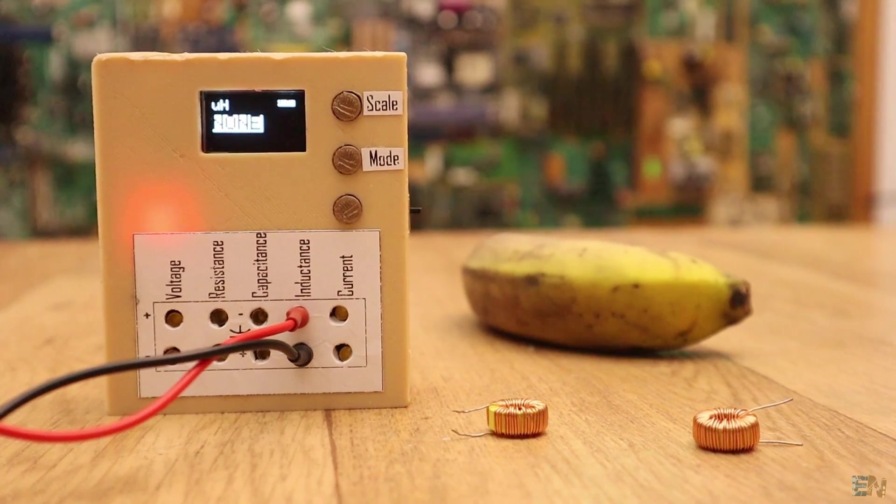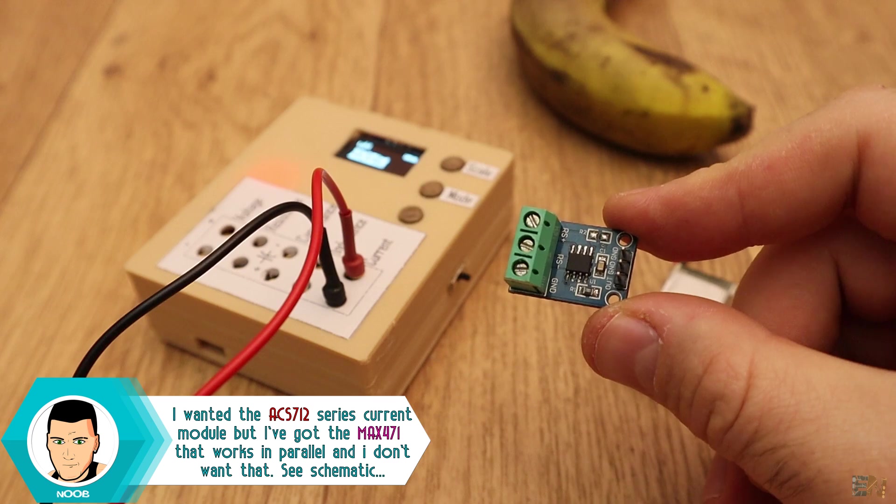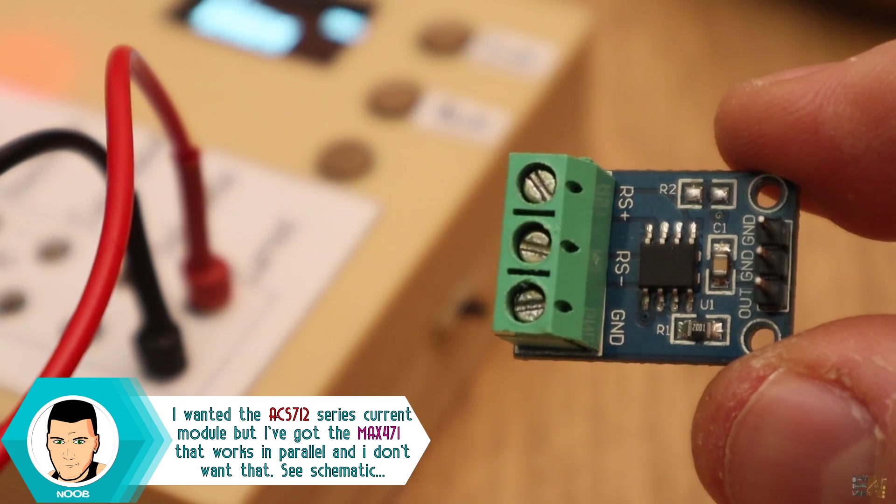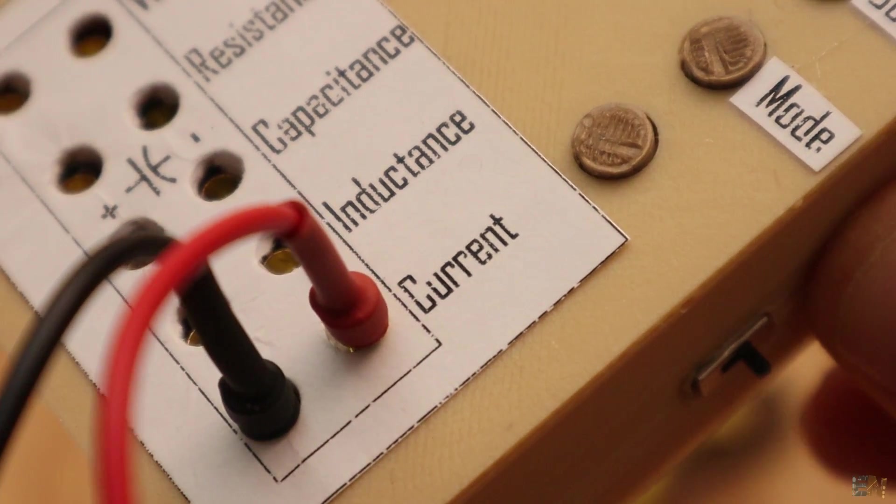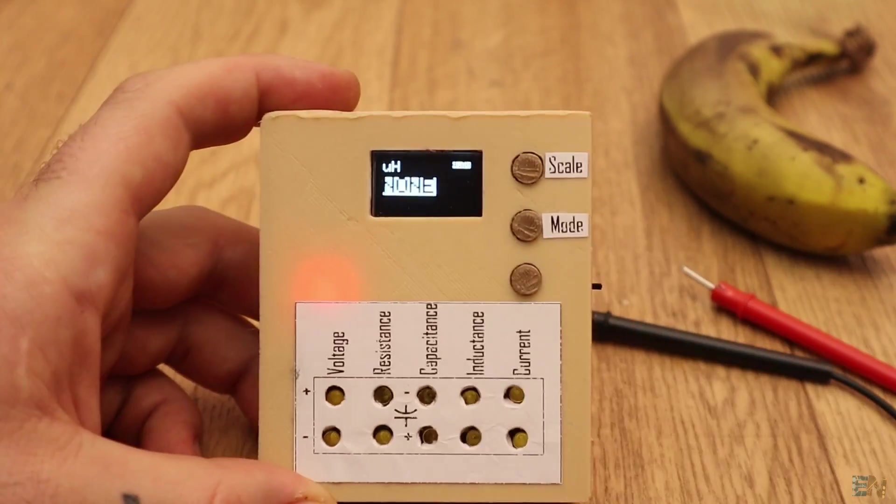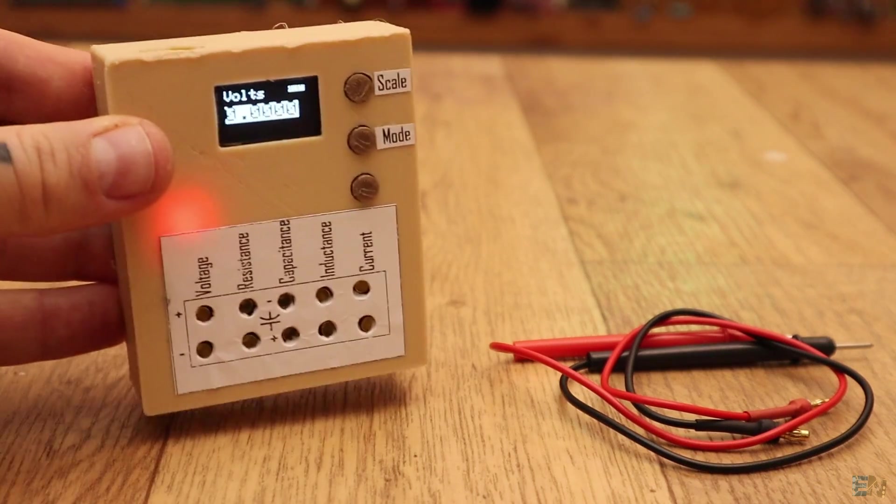So now the current meter is not working because the module that I bought is for parallel connection and I need a current measurement in series as any other multimeter. But anyway, see the schematic and the code below, use the correct module and it will measure current as well as we have seen in previous tutorials. So let's build this project.